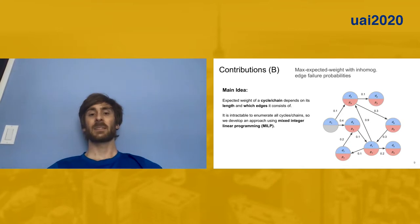Next, I'm going to talk about max expected weight matching with inhomogeneous edge failure probabilities. The main idea here is that we have an exchange graph here on the right, and we have several different edge failure probabilities. Each edge has a different edge failure probability. The main difficulty here is that the actual failure probability of a cycle or chain depends both on the length of the cycle or chain and on which edges the cycle or chain consists of. This turns out to be a fairly difficult thing to encode in a mixed-integer linear program, especially because this problem is NP-hard. We use some clever linearization techniques, and I direct you to our paper to see those.